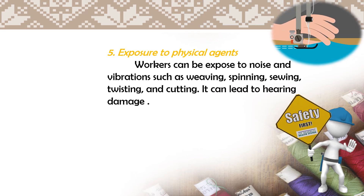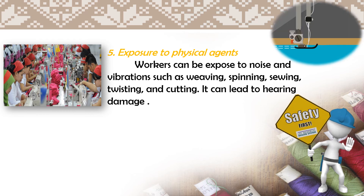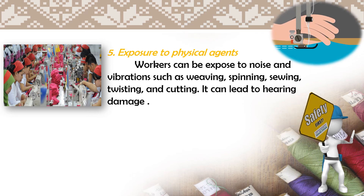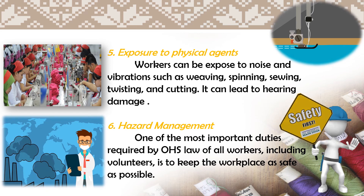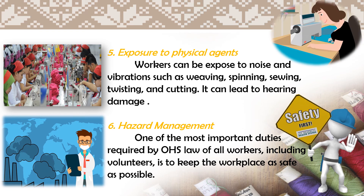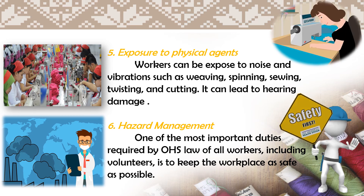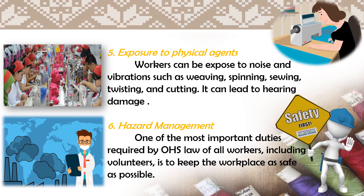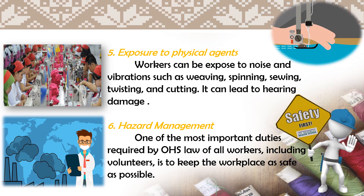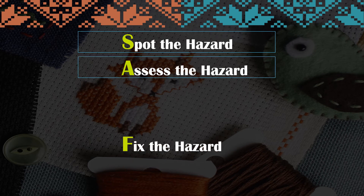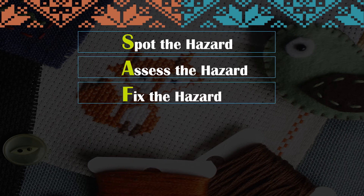Number five: exposure to physical agents — workers can be exposed to noise and vibrations from weaving, spinning, sewing, twisting, and cutting, which can lead to hearing damage. Number six is hazard management — one of the most important duties required by occupational health and safety law for all workers, including volunteers, is to keep the workplace as safe as possible. How to be safe: S — spot the hazard. A — assess the hazard. F — fix the hazard. E — evaluate the result to be safe.